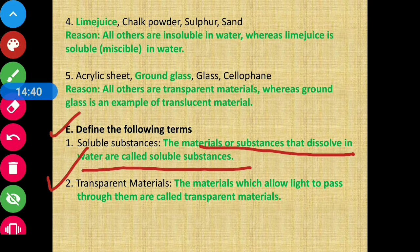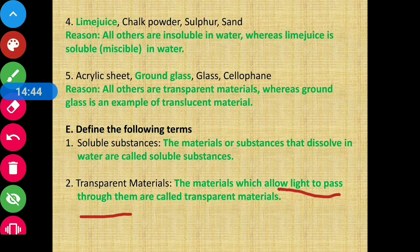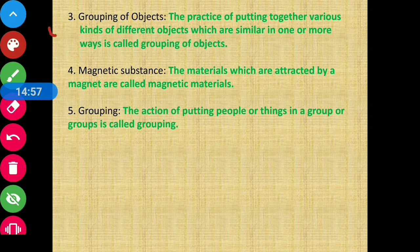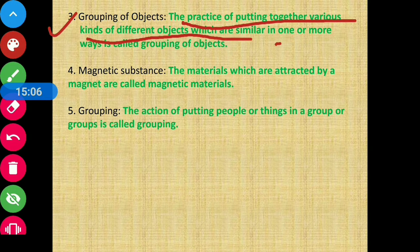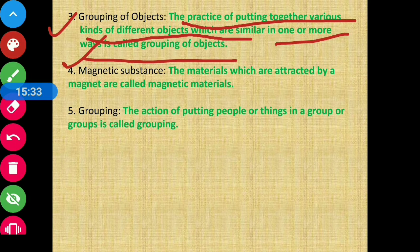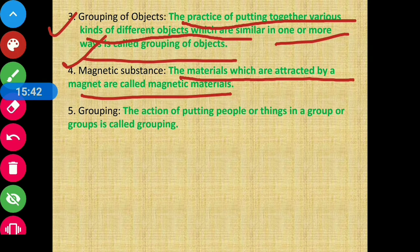Second, transparent material: materials which allow light to pass through them are called transparent materials. Third, grouping of objects: the practice of putting together various kinds of different objects which are similar in one or more ways is called grouping of objects. Fourth, magnetic material: the materials which are attracted by a magnet are called magnetic materials.